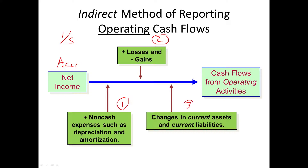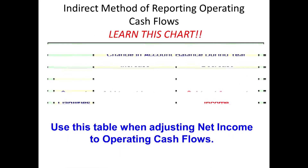Then we're going to analyze the changes in our current assets and current liabilities. There's only one current asset we will not analyze in this way — cash — because the whole statement is an analysis of the change in cash. Basically, what we're going to arrive at is a net income number as if we had used the cash basis. We're turning an accrual number into a cash flow basis. We add those non-cash expenses back because they were originally deducted in arriving at net income — by adding them back we negate their effect entirely. Losses were originally subtracted, so we add those back; same thing with subtracting out gains. Then we analyze changes in current assets and current liabilities using the chart.